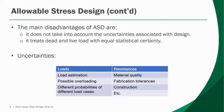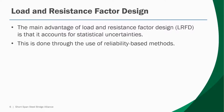While ASD is simple, it has significant disadvantages in that it doesn't consider uncertainties associated with design. There are uncertainties on both the side of loads and resistances — for example, statistical uncertainties in material quality, fabrication tolerances, and construction practices. Engineers are also far more accurate estimating dead loads than live loads such as truck traffic. Load and resistance factor design, or LRFD, accounts for these statistical uncertainties through the use of reliability-based methods — that is the main advantage of LRFD.